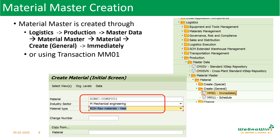The material type is responsible for external and internal number assignment, because we can define materials externally by giving numbers ourselves, or allow the system to create its own material number. It also determines which views are available and in which sequence, and how the material has to be configured. Material type also helps to control the inventory management requirement, as well as the accounting of goods movements like updating the quantity and value when doing transactions such as purchasing or putting items into inventory.